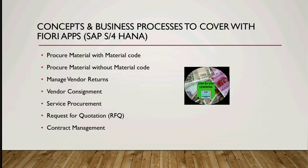Taking the first process — procurement of material with a material code — the basic steps are: first, creation of a purchase requisition. The role that performs this is the Purchaser, which is the standard role assigned with the Fiori apps. So the Purchaser will create the purchase requisition. Ideally this role performs this step, but that can vary depending on the business requirement.